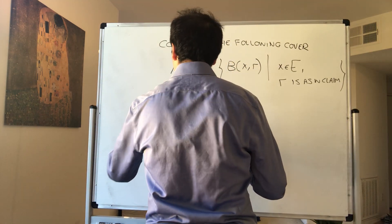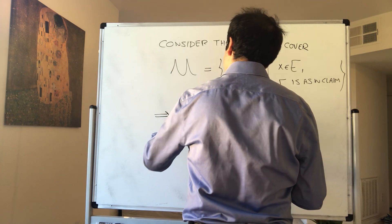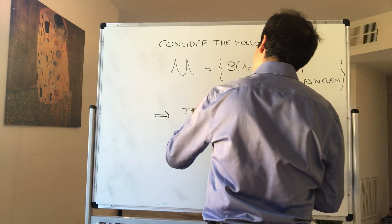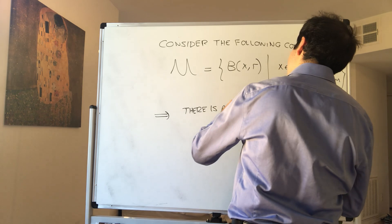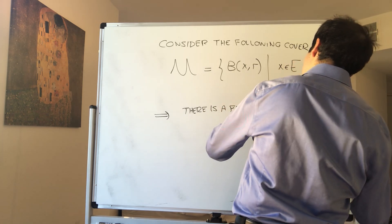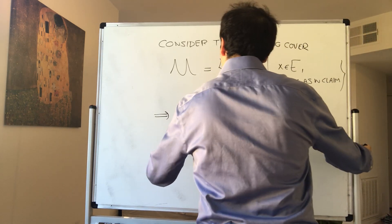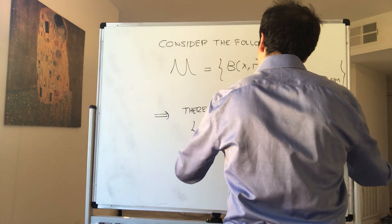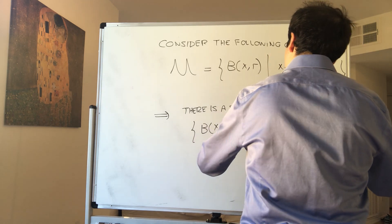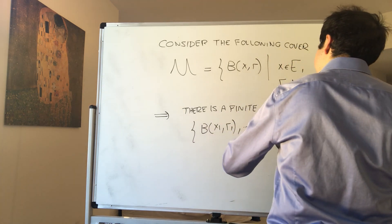So therefore, by covering compactness, there is a finite subcover. Namely, let's say, call it B(X1,R1), dot dot dot, B(XN,RN).